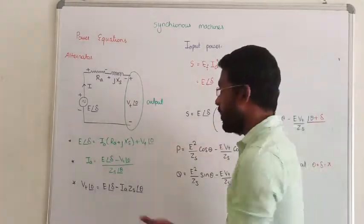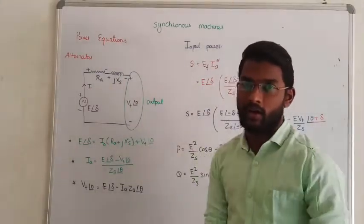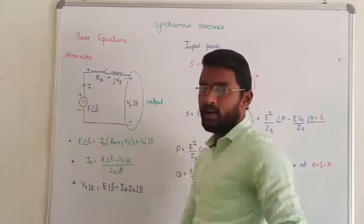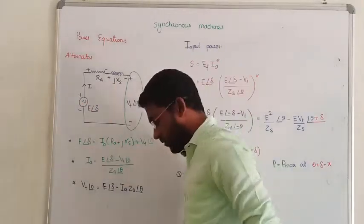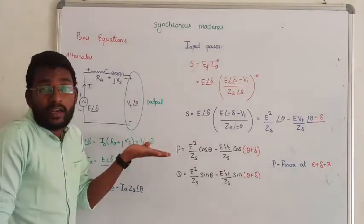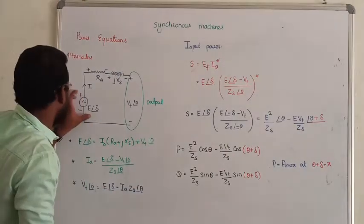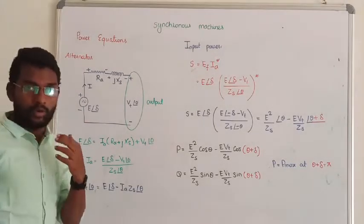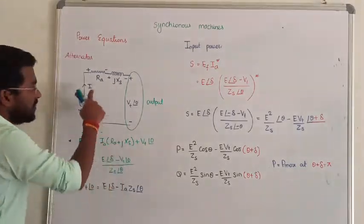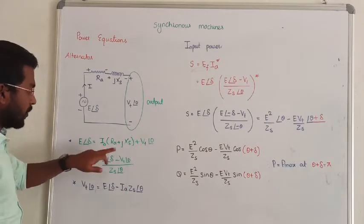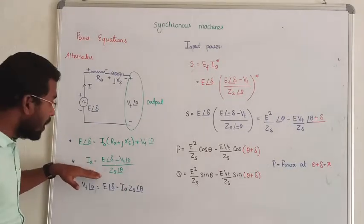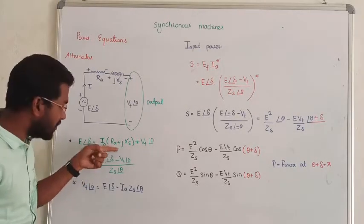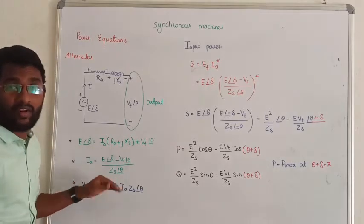This is the per-phase electrical equivalent circuit of the alternator. From this circuit we can calculate the internal power — here is the voltage and here is the current value. Applying KVL around the loop gives us two equations, from which we can obtain the current equation. The impedance angle is theta, written in rectangular coordinates, and in polar coordinate it is written as Zs at angle theta.